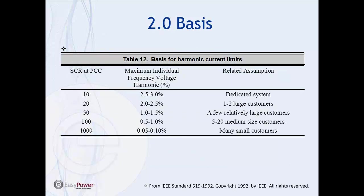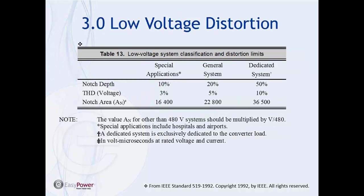There is a table in the basis section showing the short circuit versus load strength ratio — how strong your system is versus how big you are. It shows that the maximum individual harmonic in percent increases with the short circuit ratio, with increasing diversity assumed as you drop down through the table.